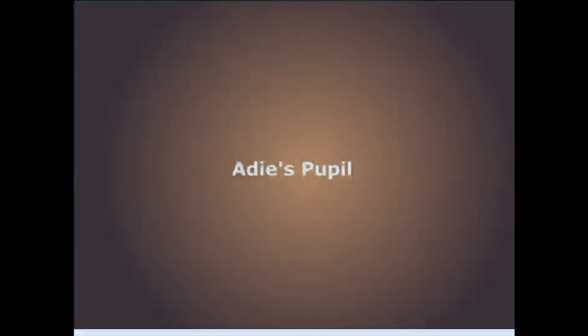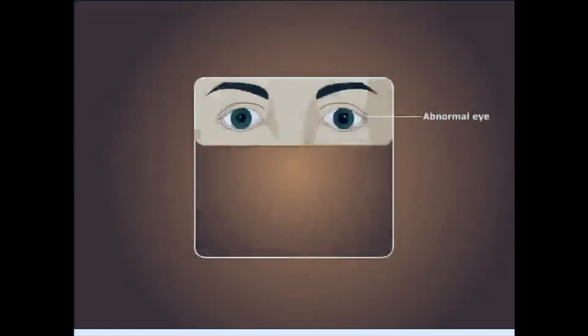Adie's pupil refers to a dilated, poorly reactive pupil secondary to dysfunction of the ciliary ganglion. The affected pupil is slightly enlarged, resulting in unequal size of the pupils, a condition known as anisocoria. When light is shined to the affected eye, there is no rapid response in the ipsilateral pupil, whereas the contralateral healthy pupil constricts normally, responding to the consensual light reflex.